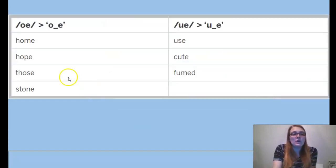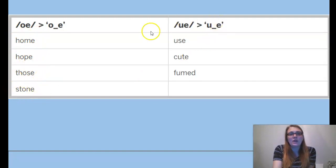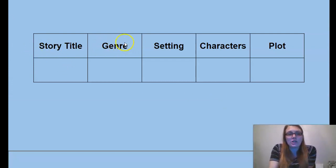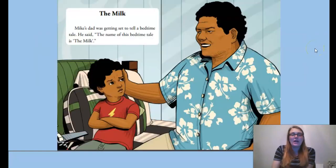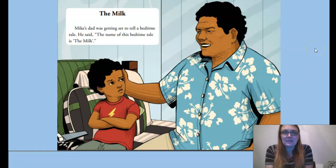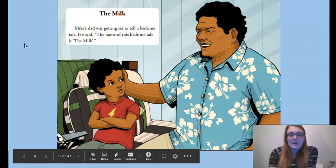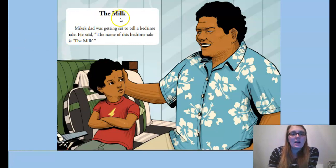This story will have some of our long vowel sounds — our long O like in home, hope, those, and stone, and our long U sound like in use, cute, and fumed. And once again when we're done, we'll fill out our chart with our story title, the genre, the setting, the characters, and the plot. We're finding ourselves back with Mike and his dad — we're in Mike's bedroom, it's bedtime. Mike's dad was going to tell him a bedtime story. So today, the milk.